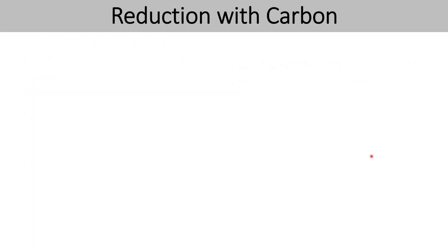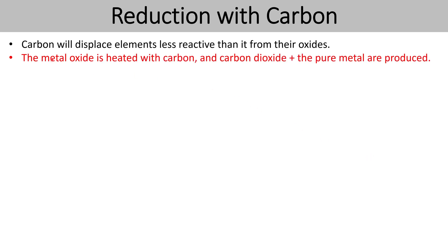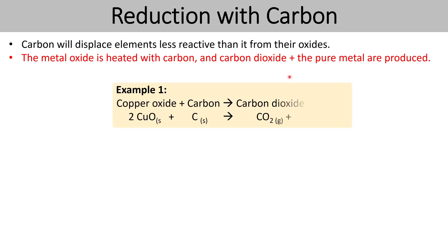Let's have a look at how reduction with carbon works. Carbon will be able to displace elements less reactive than it from their oxides — remember that some compounds found inside ores are metal oxides. What we do is heat the metal oxide with carbon, and carbon dioxide and the pure metal are produced. For example, if you take copper oxide — the compound found inside copper ore — and react it with carbon, because carbon is more reactive than copper, carbon is able to displace copper from copper oxide. In the products, the carbon is now bonded with the oxygen that originally belonged to copper, and the copper is now on its own — it's been displaced.